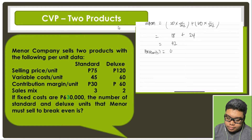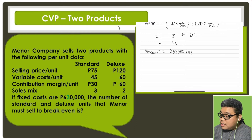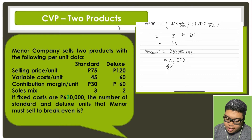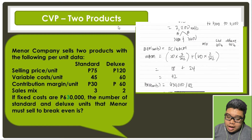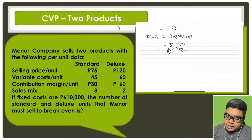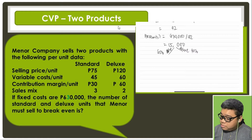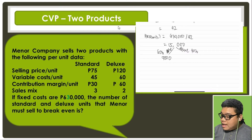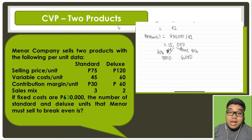To get our break-even point in units, that is 630,000 divided by 42, which gives us 15,000 units. How many would be standard and how many would be deluxe? Standard's share is 60 percent and deluxe is 40 percent. So that is 15,000 times 0.6 giving us 9,000 standard units, and 15,000 times 0.4 giving us 6,000 deluxe units.